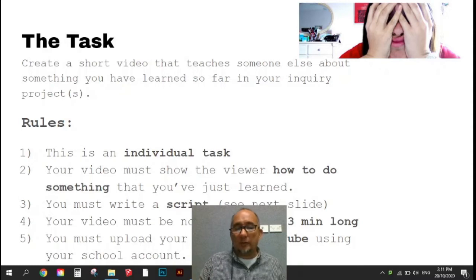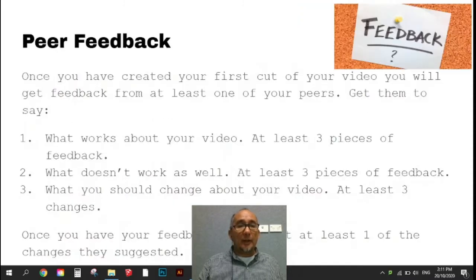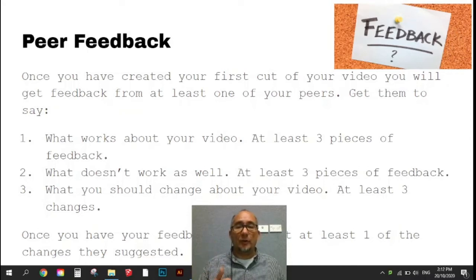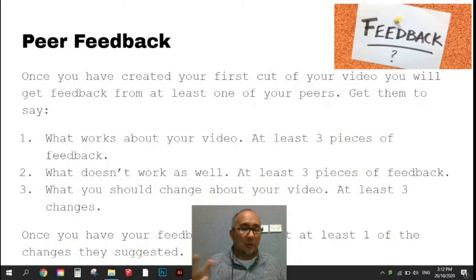If you're worried about privacy, you can change your privacy settings for that video. Then peer feedback — it's really important that you get some peer feedback, and so you'll do that once you've done the first version of your video. You'll ask them three things that work about your video, three things that don't work so well, and what changes do they suggest. Try to get three changes that they suggest you make to your video.